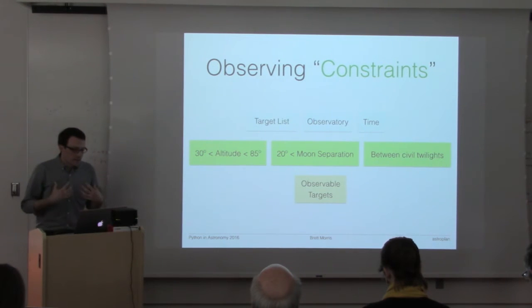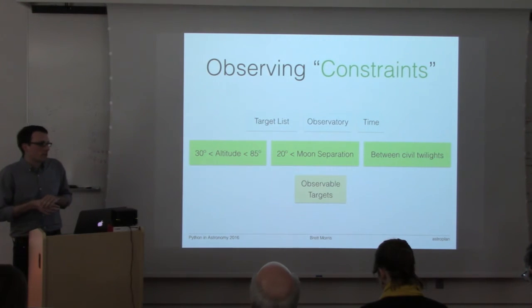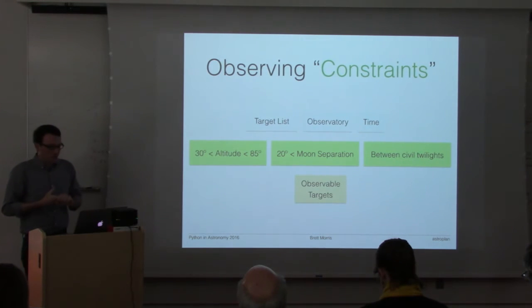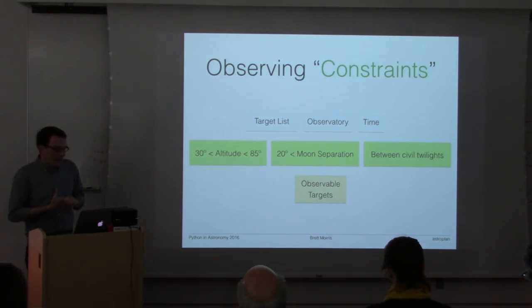The place where AstroPlan became really useful for me in my work is the way that we are allowing an easy way to compute constraints on targets, and what I'm calling constraints are the things other than is it just up in the sky. For example, when you have a target list you know what observatory observing from and you know on what time range, you still need to define pointing limits for your telescope or a separation from the moon that's allowable for your science or how dark the sky needs to be in order to do your observations.